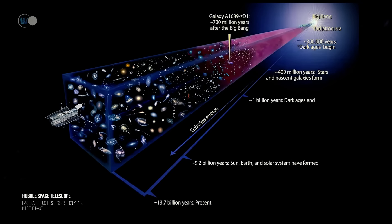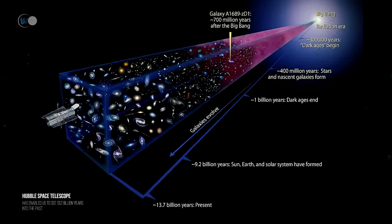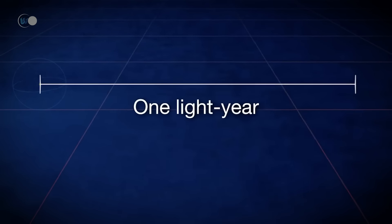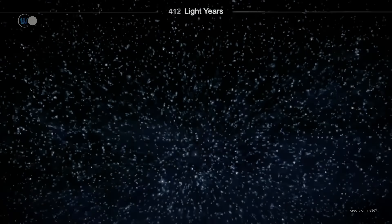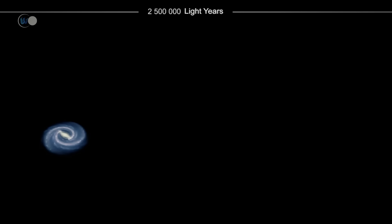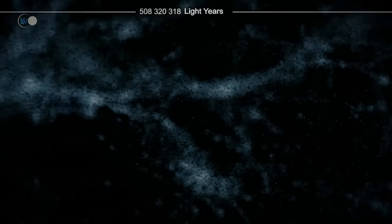The margin of error is plus or minus 0.040 billion years. Since the universe has a finite age and light propagates in a vacuum at a finite speed, the observable universe is finite. One light year corresponds to the distance traveled by light in one year. Thus the size of the observable universe is a sphere of 13.77 billion light years, delimited by the cosmological horizon centered on the observer's position — which for us is the Earth.